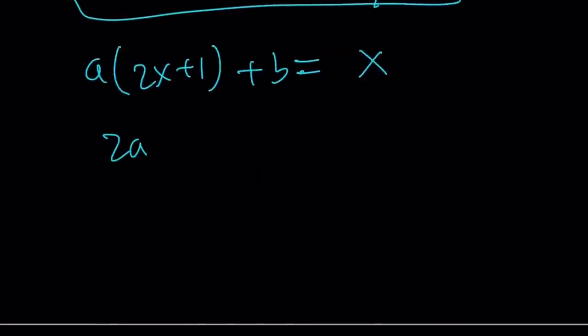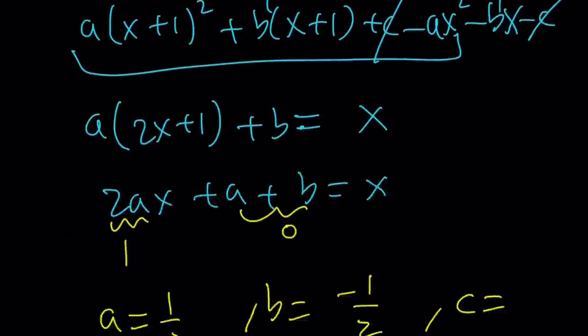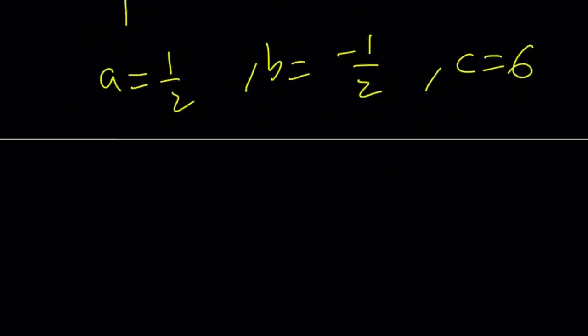The coefficient of x must be 1, which means a is 1 half. Constant term must be 0. That means b equals negative 1 half. And if you plug in the value of the P of 2, you're going to get c is equal to 6. And this gives you the same result as before.